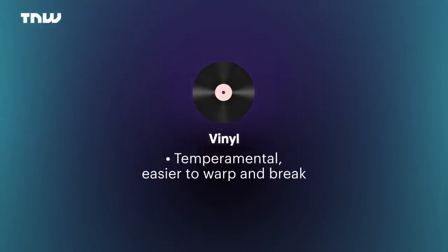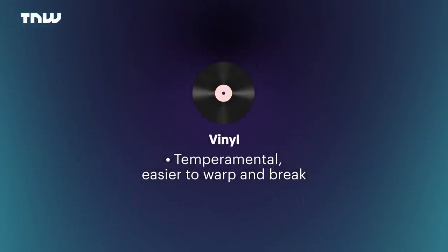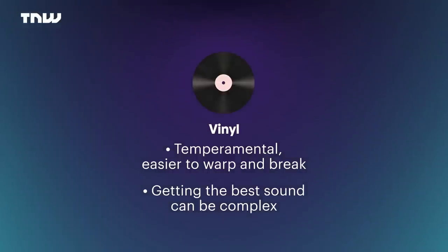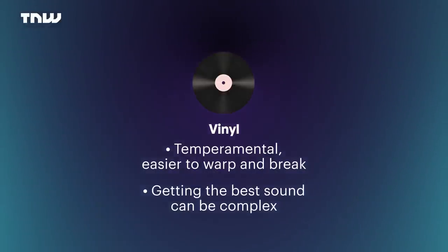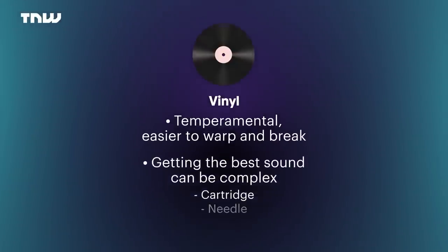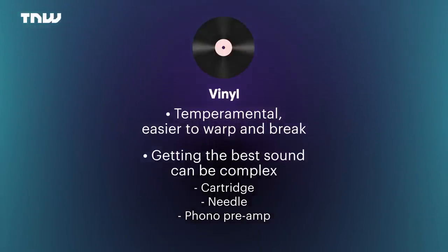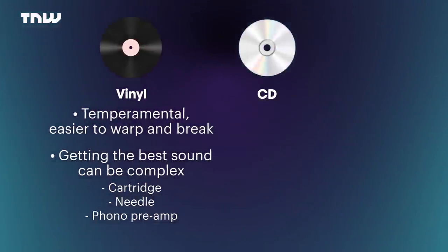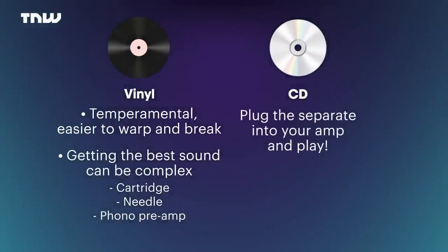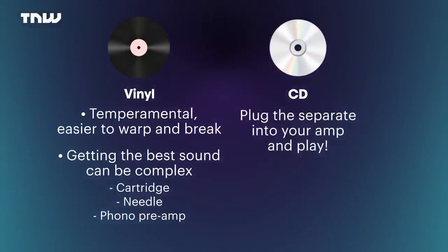Vinyl is far more temperamental — easier to warp and break. Playing records is far more fiddly and complex, and a lot more can go wrong. Once you have the record and record player, you still need a good cartridge, a fresh needle, and a decent phono preamp — all things that can hinder the sound and experience. But a CD? You literally just plug it in and it works fantastically. CDs are also far more adaptable, bridging the analogue and digital worlds.